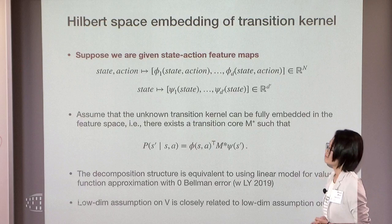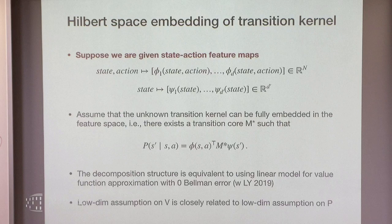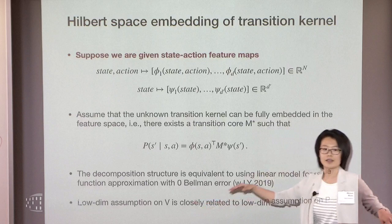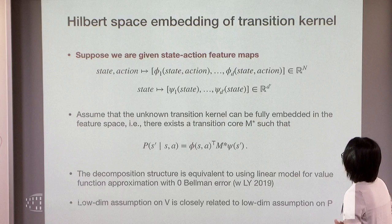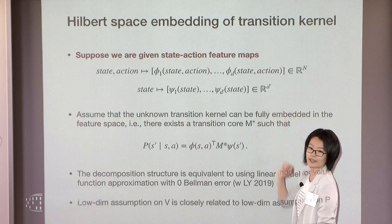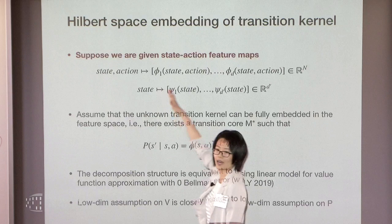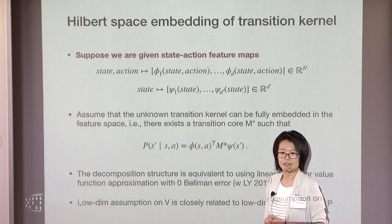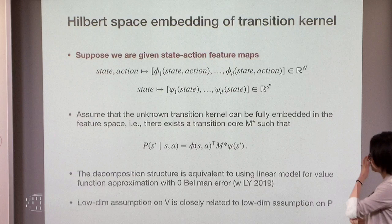Now let's consider RL in online learning with features. Suppose we are given feature maps — each state can be mapped into a vector, and state-action pairs are mapped jointly into a feature map (if we have separate state and action features, we can take their product). Whenever we have a state-action-next-state triplet, we map it into a phi vector for state-action and a psi vector for next state. Originally states might be raw pixel images, but after this mapping they become lower-dimensional vectors.